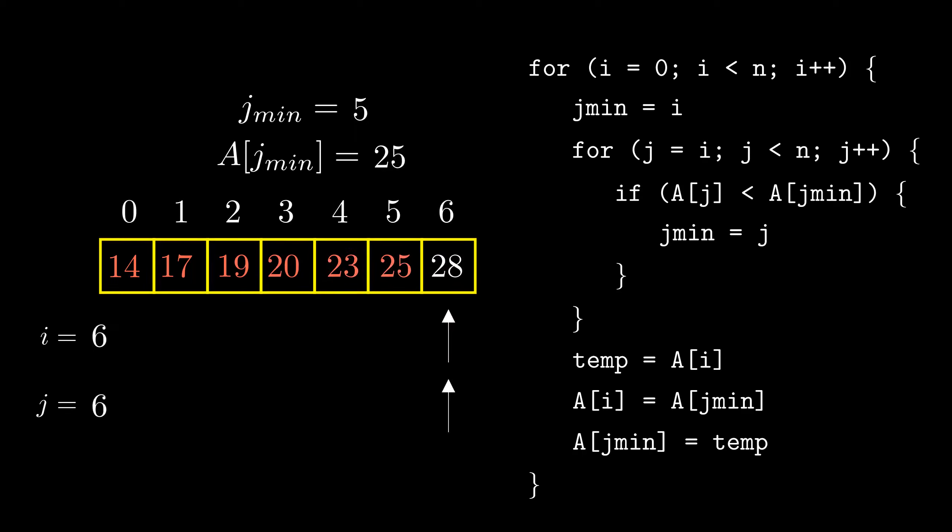Great. So this was selection sort. Now let's have a look at the time complexity of selection sort. Time complexity of selection sort is fairly easy to determine. Looking at the code, it is clear that this if statement lies inside the double loop. So it will execute the most number of times and thus will determine the complexity of the algorithm.